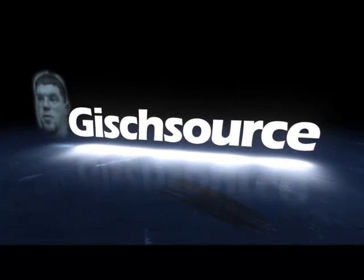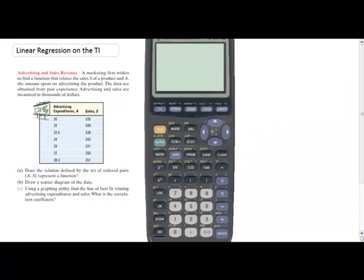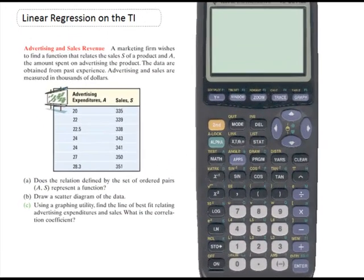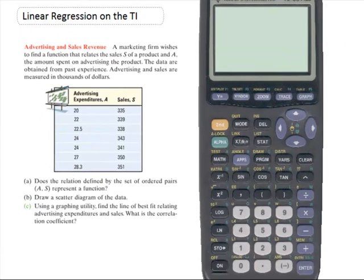Use the source. Let's go through this problem dealing with linear regression on the TI. This is just taken out of a textbook that I have. It says a marketing firm wishes to find a function that relates the sales S of a product and A, the amount spent on advertising the product. The data are obtained from past experience. Advertising and sales are measured in thousands of dollars.